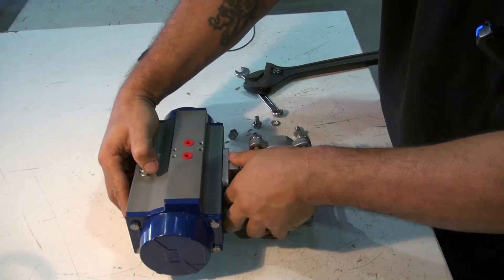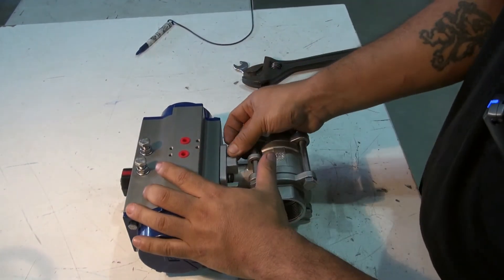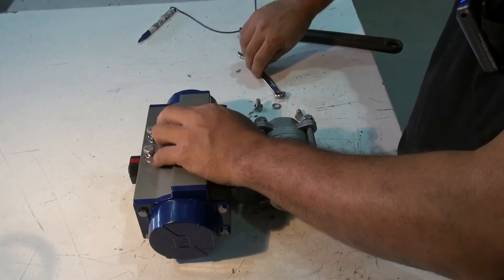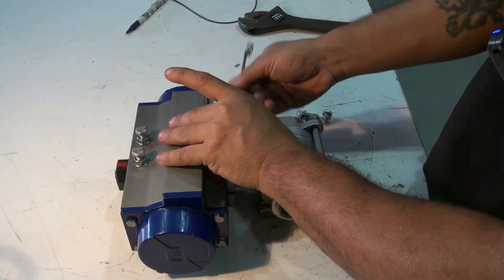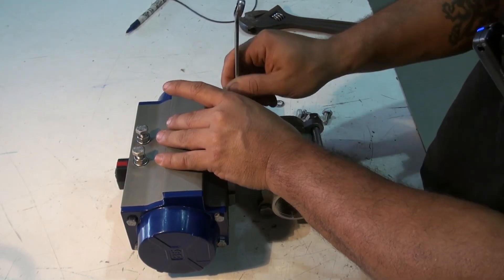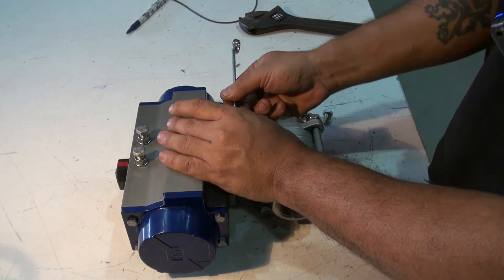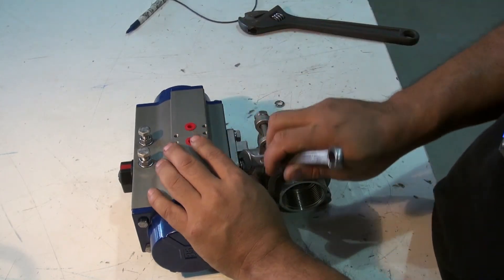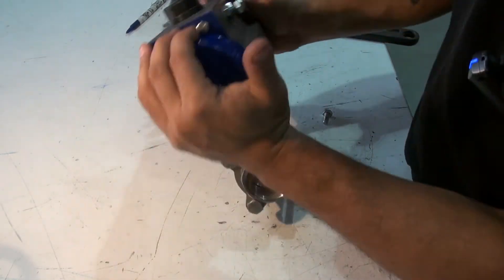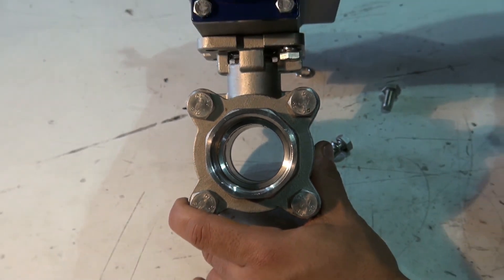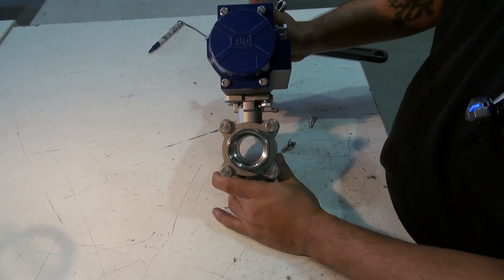Bolt it back up, and I finish bolting it up. The valve should be in the open position. When you actuate it with air, it'll close, and when you disconnect the air, it'll open up again.